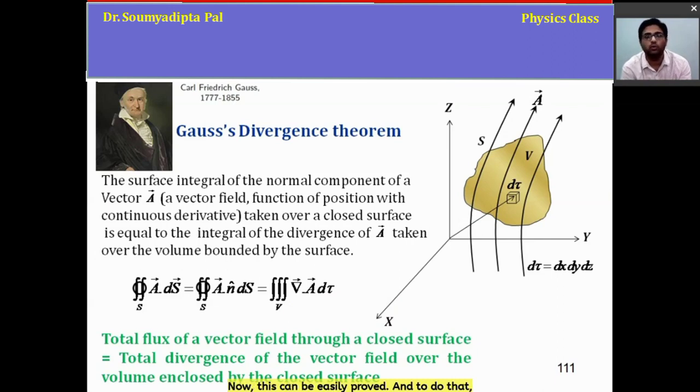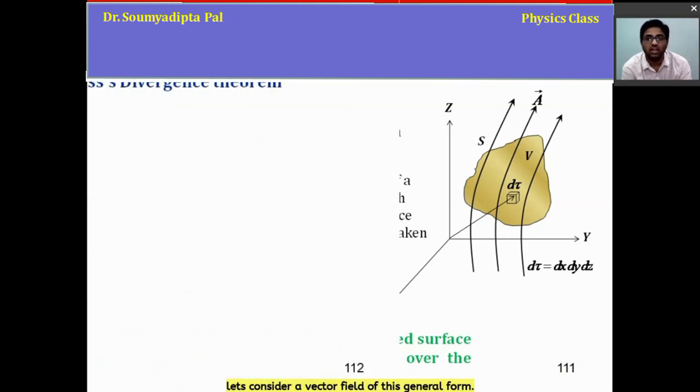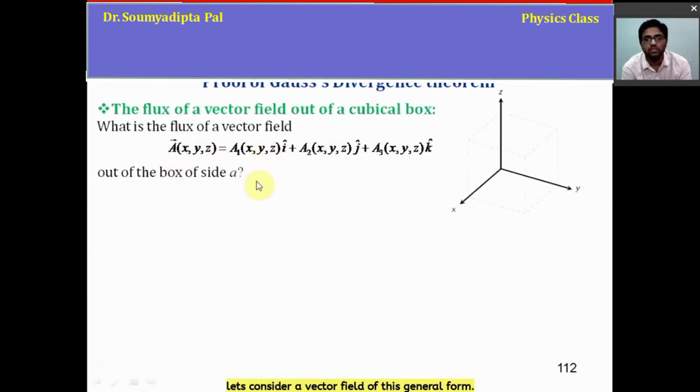Now this can be easily proved. To do that, let's consider a vector field of this general form. Then the flux of this vector field out of this cubical box of side A has to be found out.